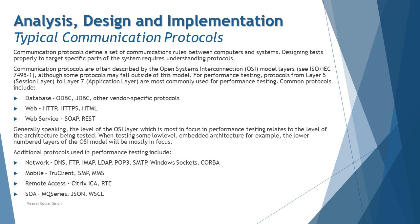Generally speaking, the level of the OSI layer most in focus during performance testing relates to the level of architecture being tested. When testing a low-level embedded architecture, for example, the lower layers of the OSI model — roughly Layers 1 through 4 — will be mostly in focus. There are additional protocols used for performance testing at those layers, adding to what is called a multi-protocol system.